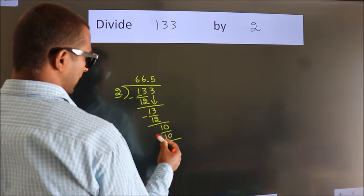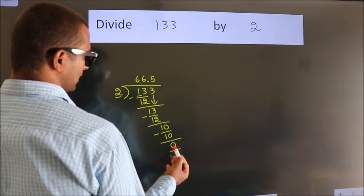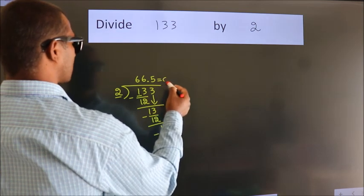Now, we subtract. We get 0. We got remainder 0. So, this is our quotient.